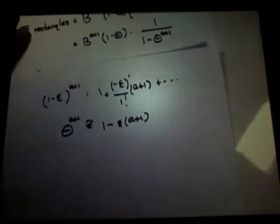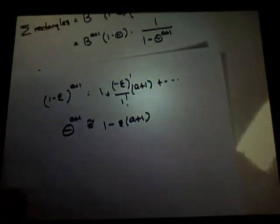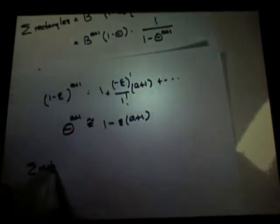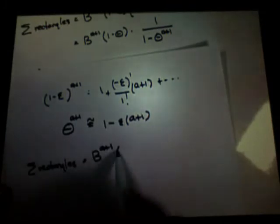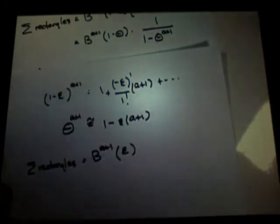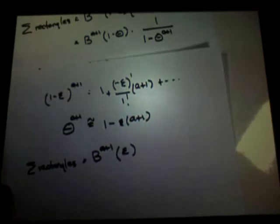So now we go back up here and fill in the blanks. The sum of rectangles equals B to the a plus one. One minus theta is epsilon, right? By definition.